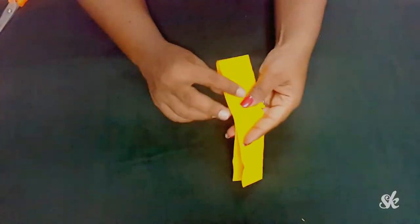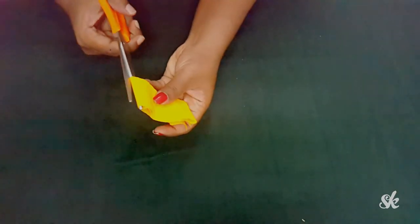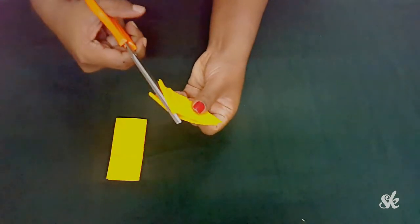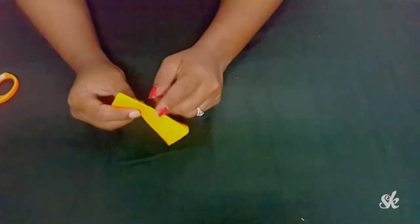After that, set and cut out the desired petal width from the strips. Here I have decided my petal width. Unfold the strip and apply glue to one end of it like this. Here the folded end will be the base of our flower.